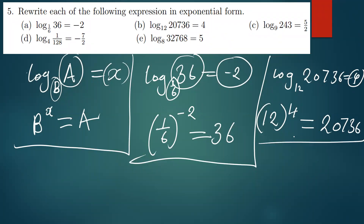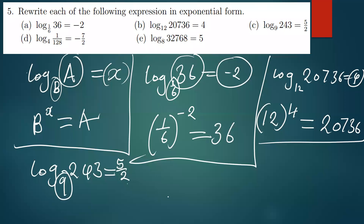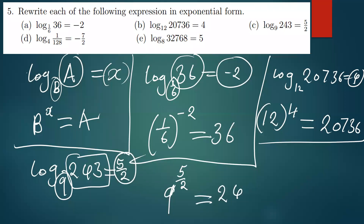This is how you convert — it's very simple. The next one is the log of 243 being equal to 5 over 2 with base 9. Converting to exponential is simple: the base is 9, which remains the base in exponential form. The power is 5 over 2, and this equals 243.